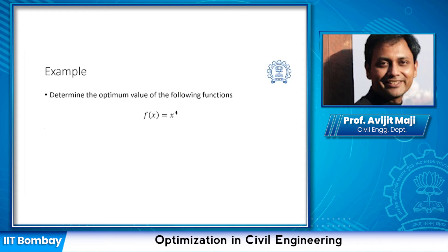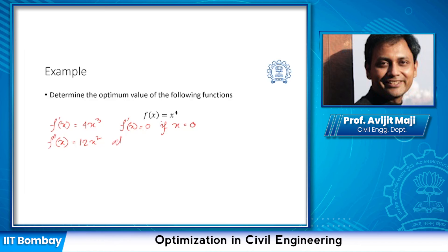Now we look into another function: f(x) = x⁴. Looking into the first order derivative, we get f'(x) = 4x³, which equals zero when x = 0. So x = 0 is the point we need to check. Looking into the second order derivative, we get 12x², and at x = 0 the second order derivative is also equal to zero, so we cannot decide.